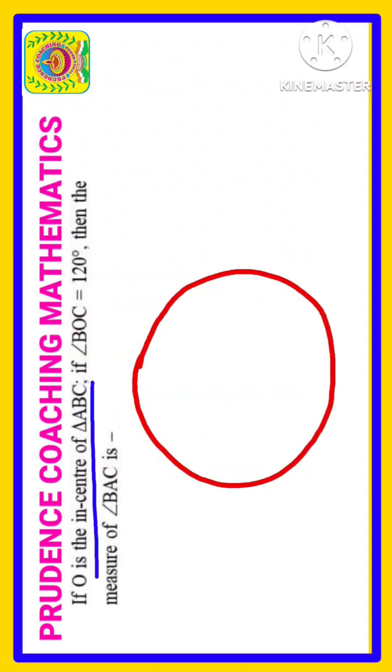If O is the incenter of triangle ABC, that means within this particular circle there is a triangle, and the center of this circle is the incenter. Let it be O. According to the question it is given as O, so let us write A, and this triangle is ABC.